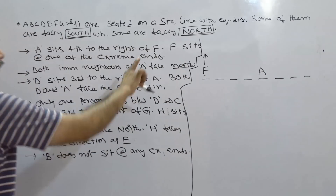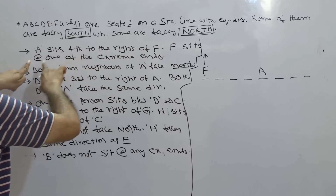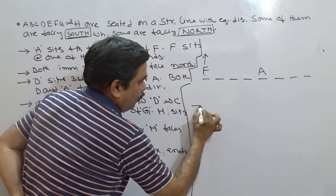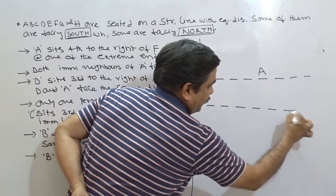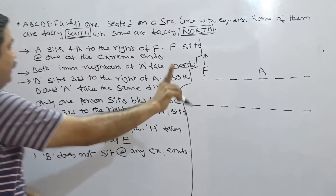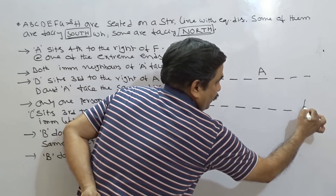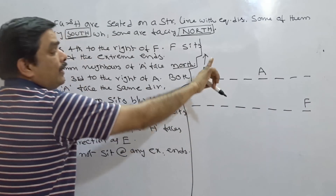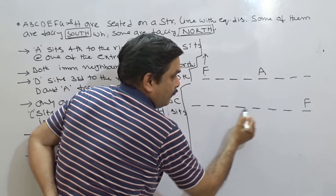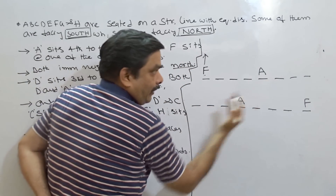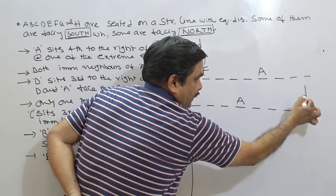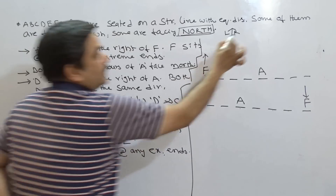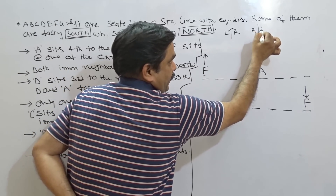For the second possibility, F should be on the right end. Now A is fourth to the right of F, counting 1, 2, 3, 4 - it should be A. In this case, A should be on the right side of F, so F must be facing south. Remember, for a person facing north, right is one direction; for a person facing south, right is the opposite direction. Now applying the next clue: both the immediate neighbors of A face north - in both arrangements, those two neighbors face north.